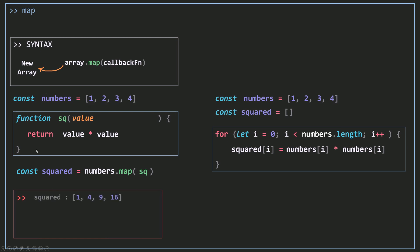When I look at my squared array after this code runs, we'll see the squared numbers — the same result we got using a for loop. Map calls sq on the first element: 1 is the value, 1 times 1 equals 1. Then it goes to the second element 2, value is 2, 2 times 2 equals 4, and so on.